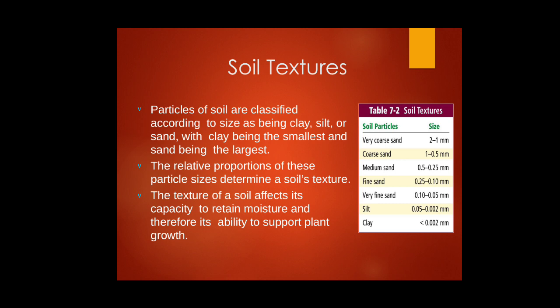Soil texture is classified by particle size: clay is the smallest, followed by silt, then sand as the largest. The relative proportion of these particle sizes determines soil texture. Texture affects the soil's capacity to retain moisture and support plant growth. Fine-grained soils hold more water and are more suitable for agriculture. Coarse-grained, porous soils allow water to seep to the water table — reachable only by old deep-rooted trees — making them infertile and unsuitable for agriculture.